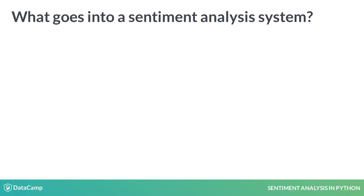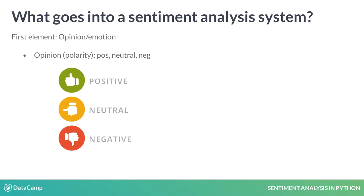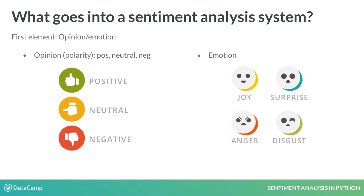In a sentiment analysis system, depending on the context, we usually have three elements. First is the opinion or an emotion. An opinion, also called polarity, can be positive, neutral or negative. An emotion could be qualitative like joy, surprise or anger, or quantitative, like rating a movie on the scale from 1 to 10.